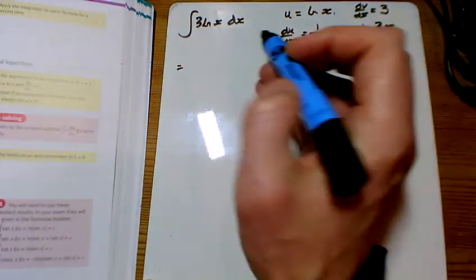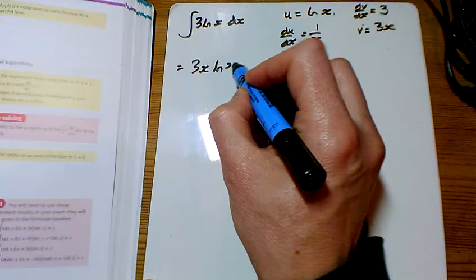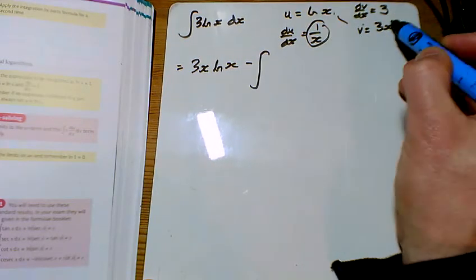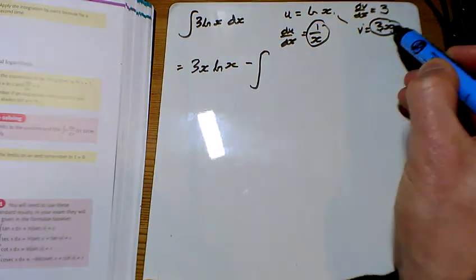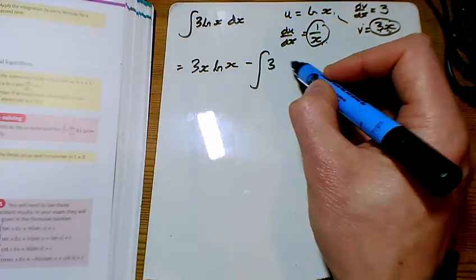But what if u times v, those two bits times together, minus the integral of the two things you've just worked out? Now, that times by that, 3x times by 1 over x, the x is going to cancel, leaving you just with 3.